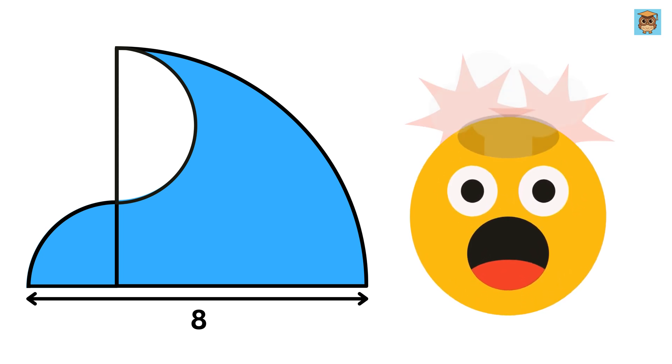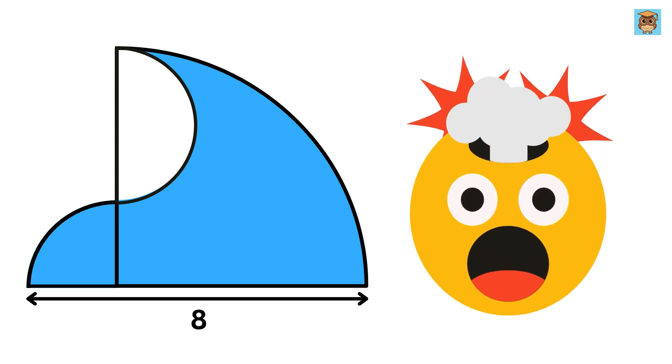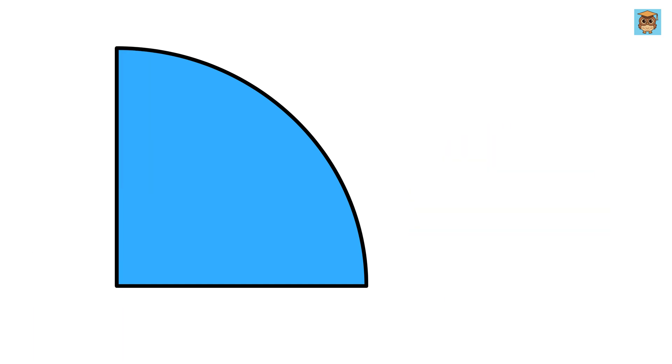This question is going to blow your mind, and I will let you know why at the end of this video. We have a quarter circle which has a hole in it, and it is of the semicircle shape.